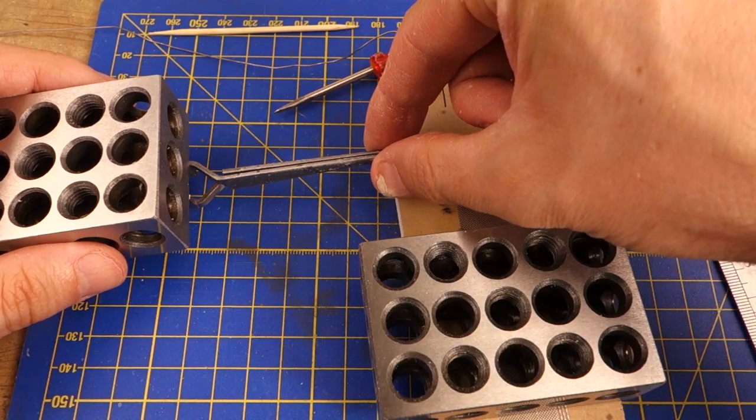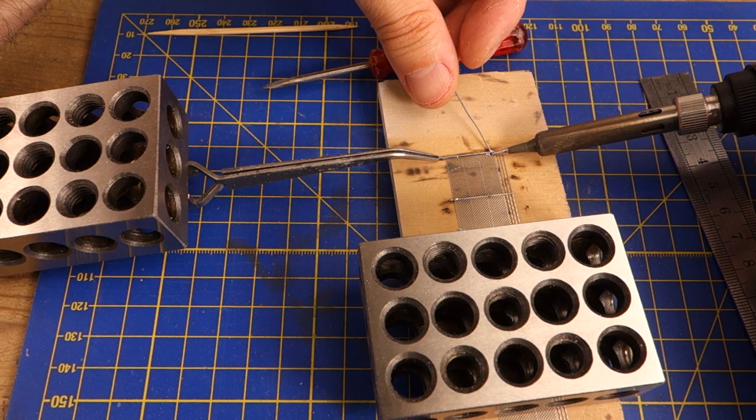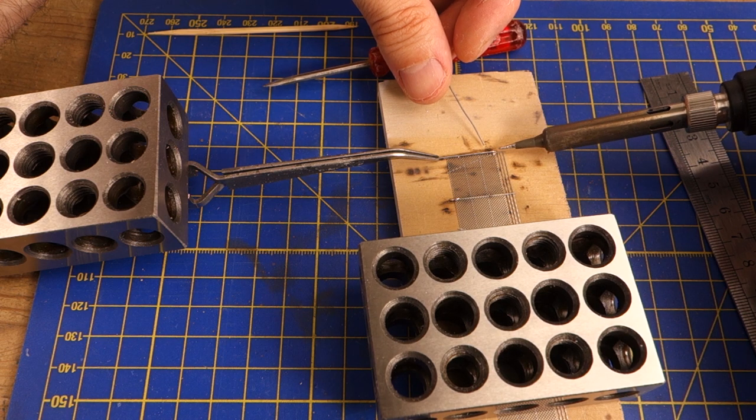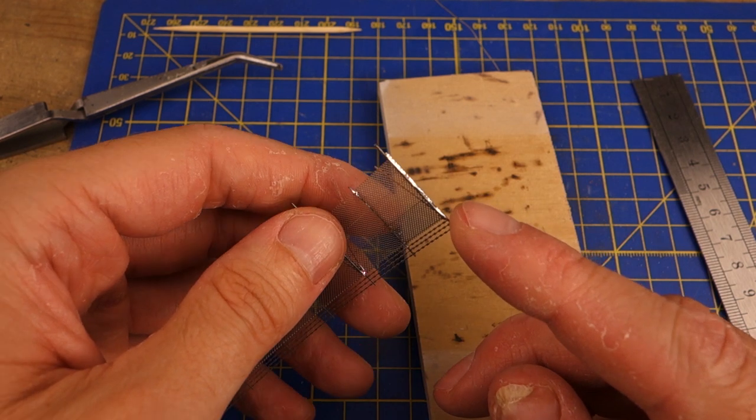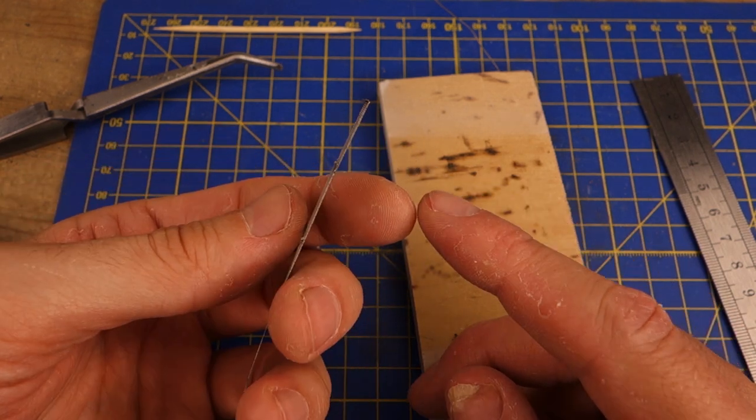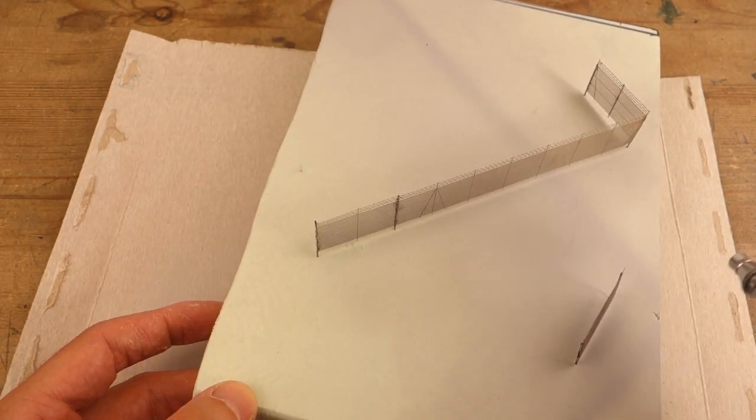Then I proceeded to solder the fence sections. I used 0.6mm steel wire as additional support for the fence. After cleaning the assembled fence with warm soapy water and thoroughly rinsing it, I airbrushed the fence with sky grey.